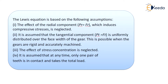Now let us talk about the assumptions made for Lewis equation. The first assumption is that the effect of the radial component, that is PR or FR, which induces compressive stress, is neglected. The second assumption is that the tangential component PT or FT is uniformly distributed over the face width of the gear.